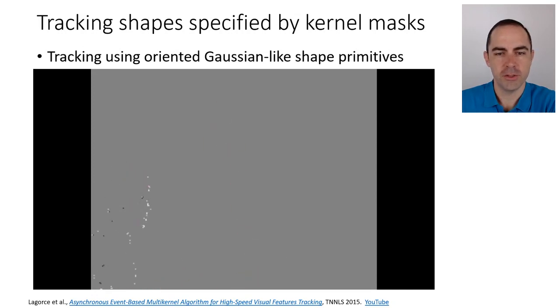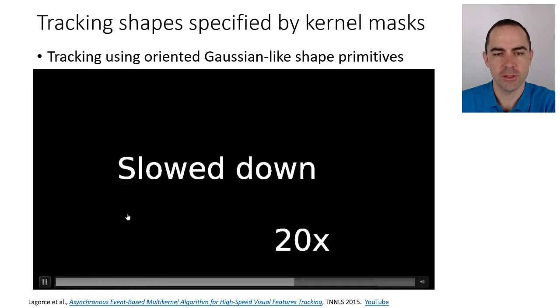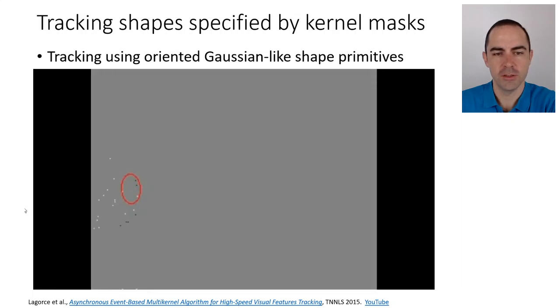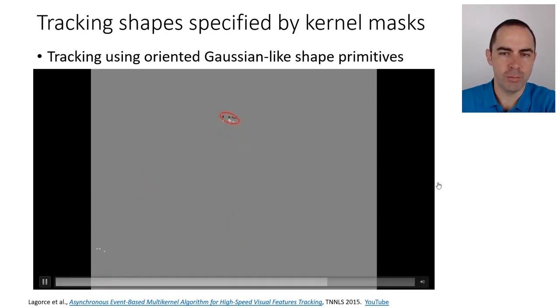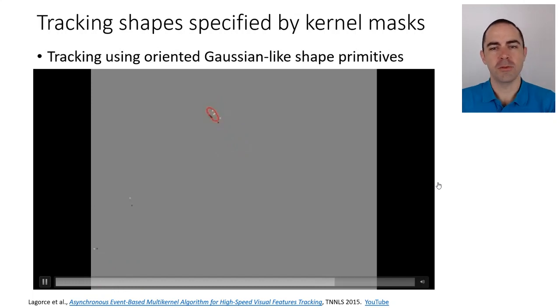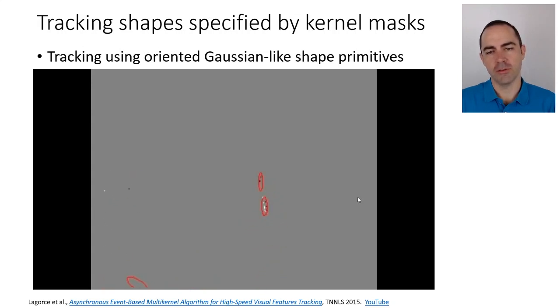Here is a person throwing a pen in the air, and as you can see, the pen is being tracked by these elongated Gabor-like primitives. You can see the four different colors because you have a different color for each orientation. Even the person's head and arm—when it comes, the events—have some trackers that are being assigned to them.